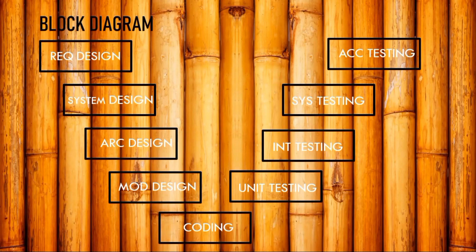Looking at the block diagram of the verification model, you can clearly see all the phases are designed in the form of a V-shape — that is the reason it is called the V model. The main application is that it includes a design phase, testing phase, and coding phase. On the left side: requirement design, system design, architecture design, and module design — these are the designing phases. On the right side: unit testing, integration testing, system testing, and acceptance testing. Each module design and testing are interlinked, and in the middle comes the coding phase.